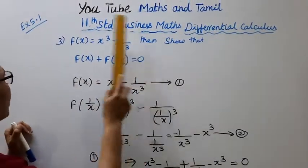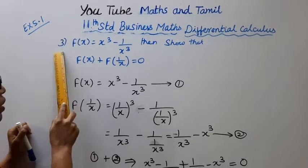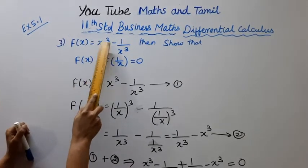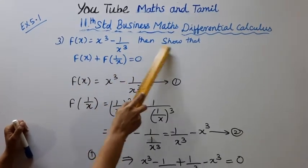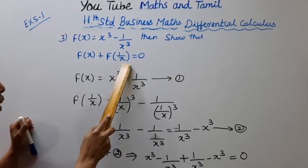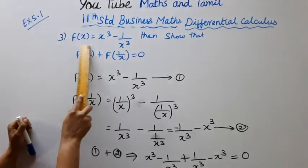Levenstone of Business Maths Differential Calculus Exercise 5.1, third problem: f of x equals x cubed minus 1 by x cubed. Then show that f of x plus f of 1 by x equals 0.